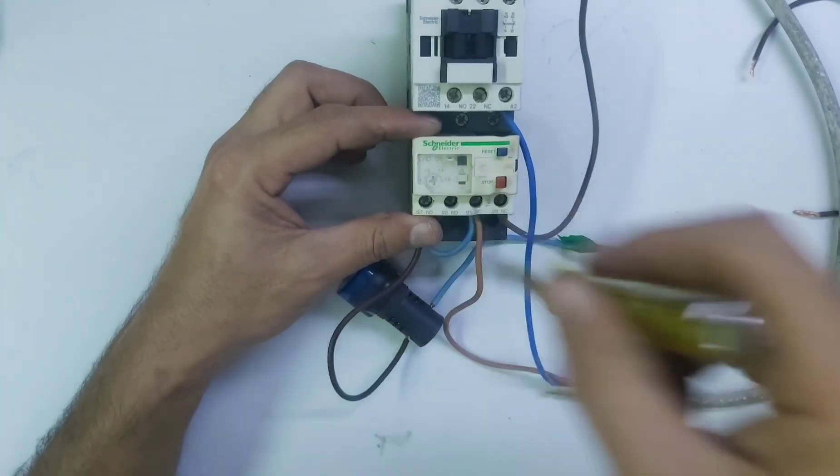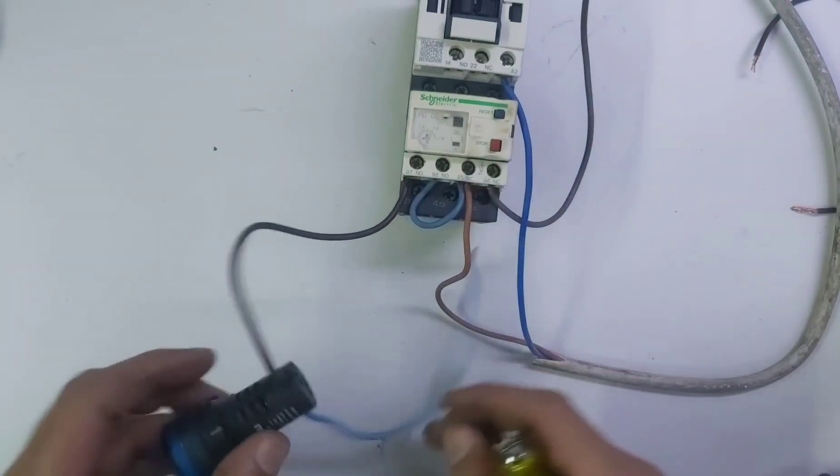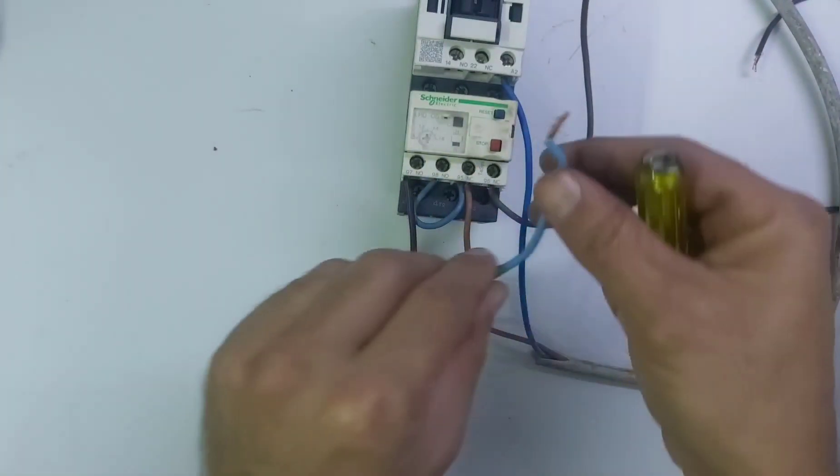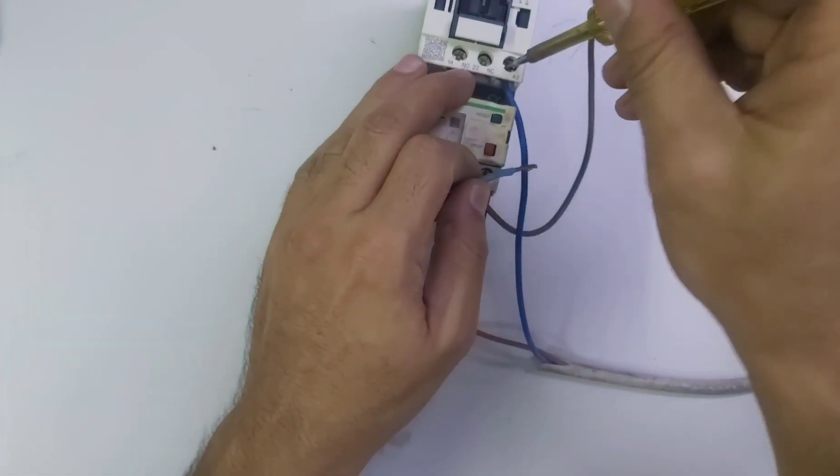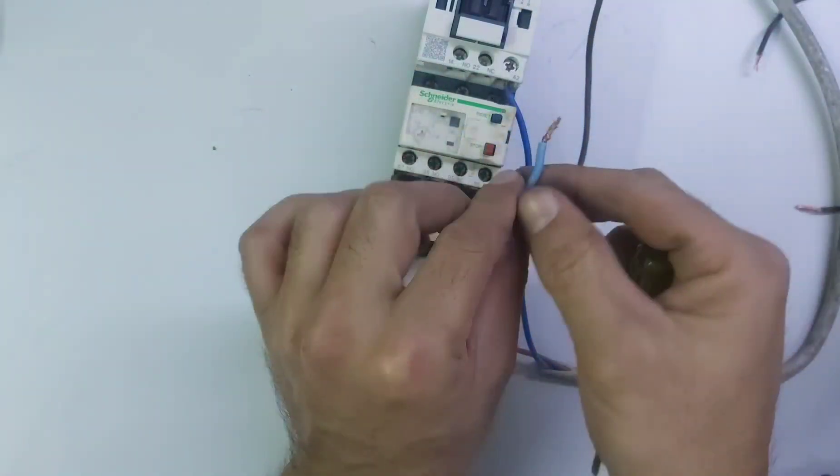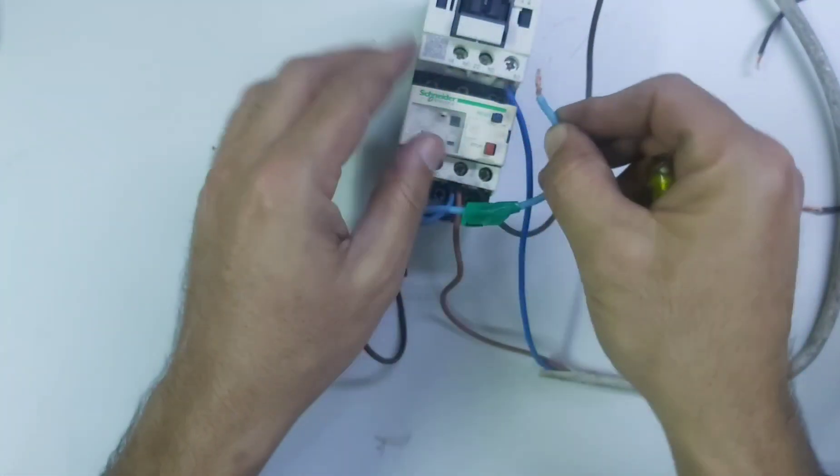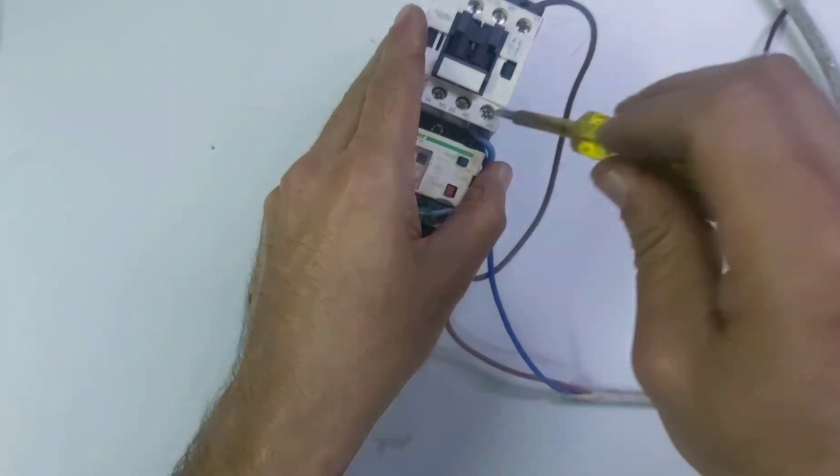97 trip indicator. Neutral we will give from direct line. So I will connect from A2. So this is neutral to the trip indicator.